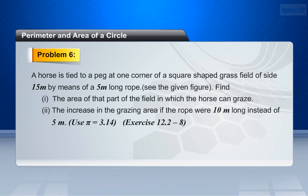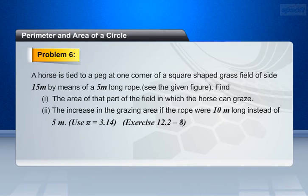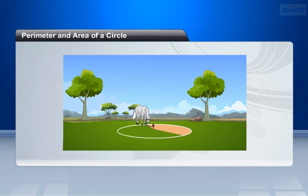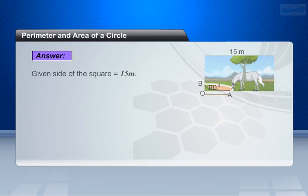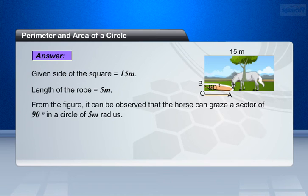Problem 6. A horse is tied to a peg at one corner of a square shaped grass field of side 15 meters, by means of a 5 meters long rope. See the given figure. Find the area of that part of the field in which the horse can graze, and the increase in the grazing area if the rope were 10 meters long instead of 5 meters. Use pi equals 3.14. From the figure, it can be observed that the horse can graze a sector of 90 degrees in a circle of 5 meter radius.